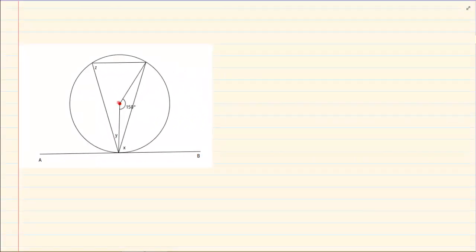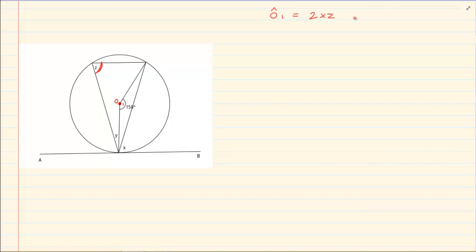The following example has a centre, and that is very important. When we have an angle at the centre and an angle at the circumference, that is one of the most used rules — a very old rule you have learnt from the beginning. If this angle at O1 is equal to 150 degrees, then O1 equals 2 times Z. The angle at the centre is 2 times the angle at the circumference.